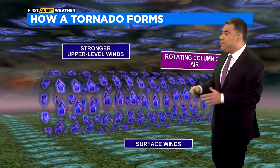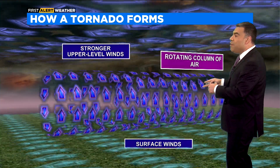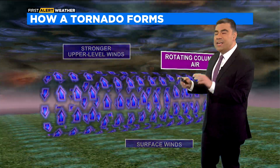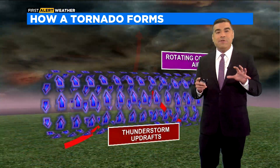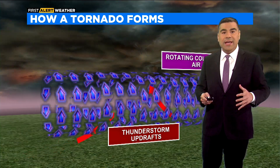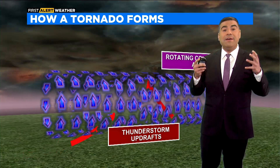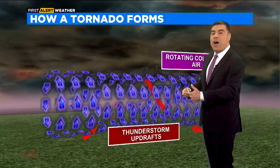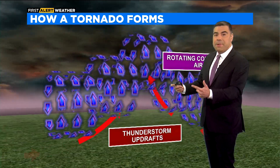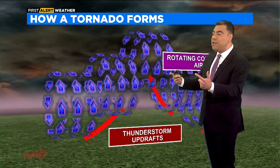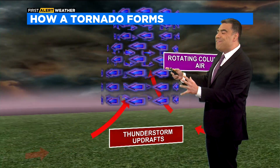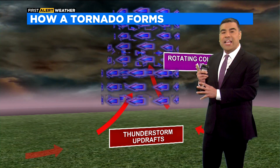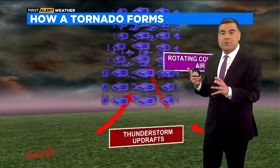First it starts off as a horizontal rotation in the atmosphere, but within thunderstorms there's rising air and falling air — what we call updrafts and downdrafts. This rotating horizontal column of air gets picked up by those updrafts inside thunderstorms and tilts vertically, allowing the thunderstorm itself to spin and rotate.